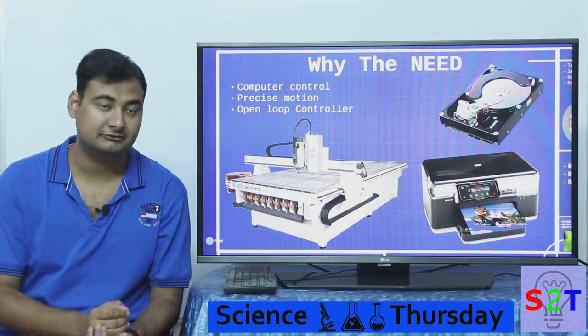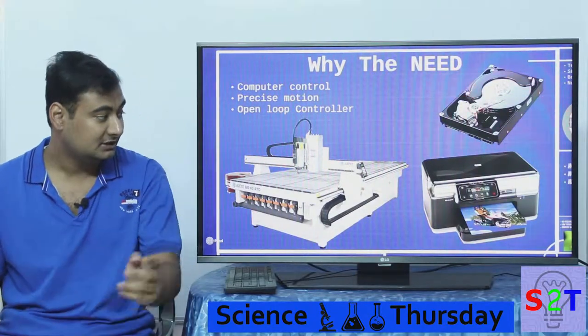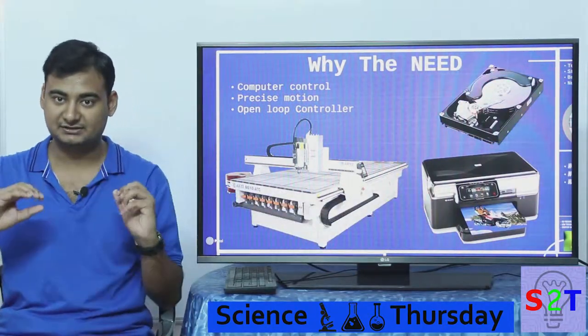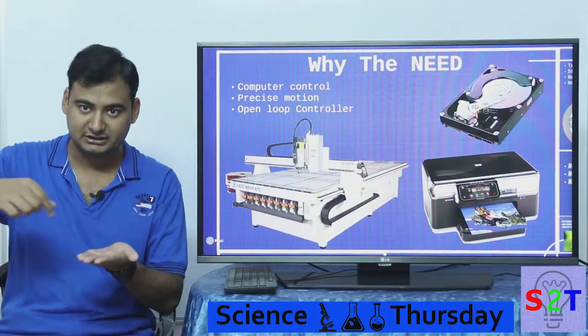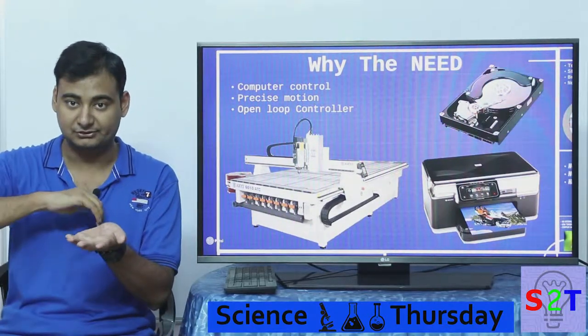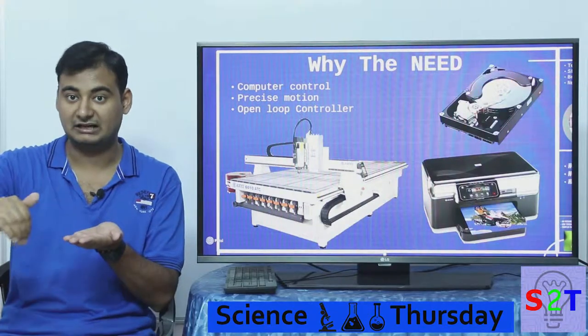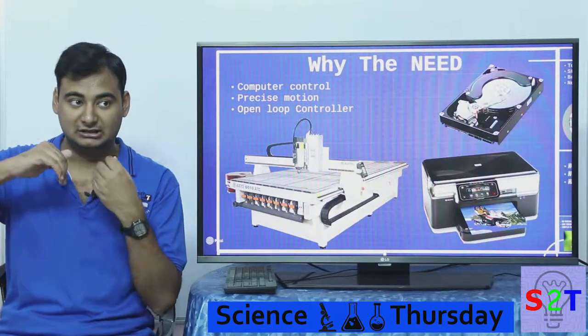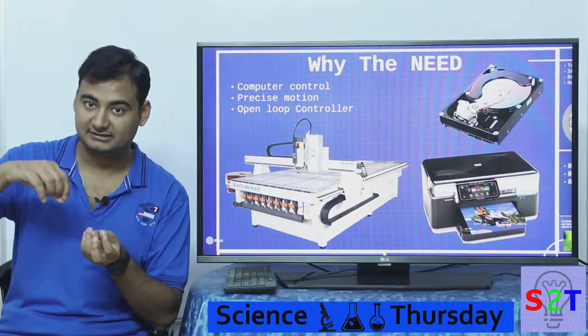For that reason we have to have a precision controlled system, and also for printers. As you can see, the paper rolls out and then you have a head that is going back and forth. So how much it's going back and forth must be controlled, and the computer also needs feedback.